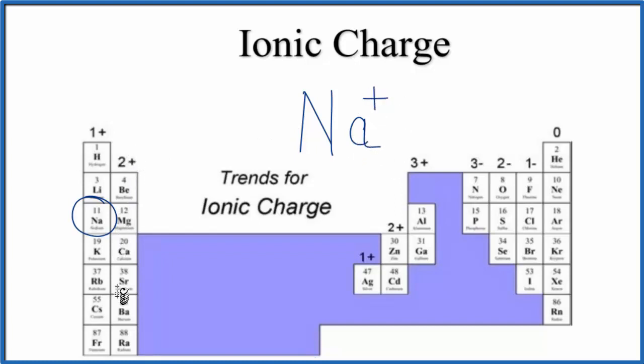We can see for Group 2, it's 2+. We skip the transition metals in some of these, then we go 3-, 2-, 1-, and here at the noble gases the ionic charge is 0.